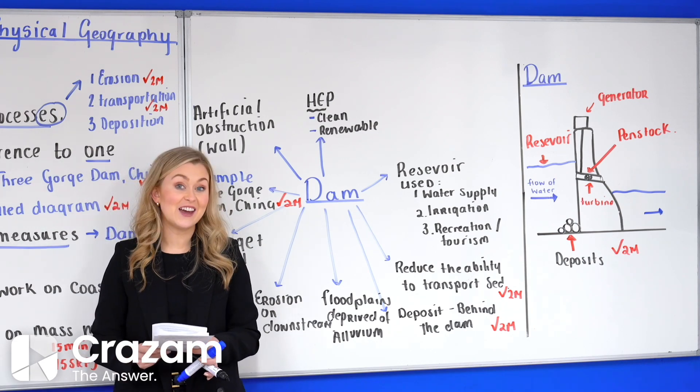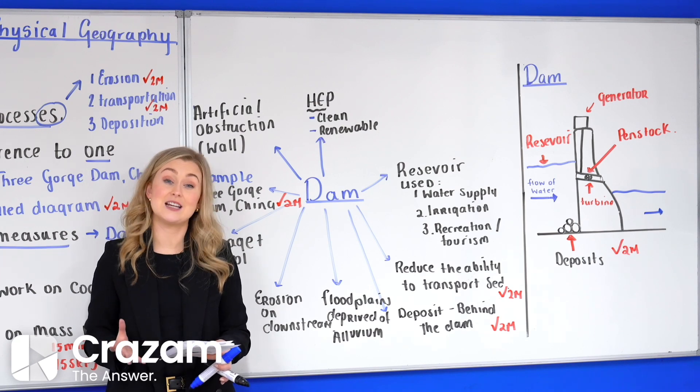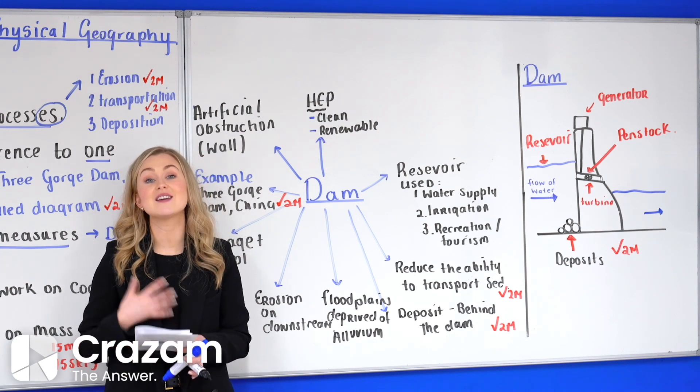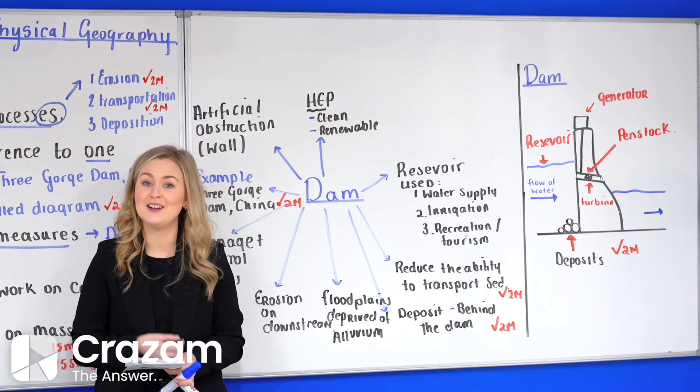Now guys that there is our 2021 question 2C based on dam construction and asking our question about humans impact on the surface processes in relation to flood control and flood prevention.